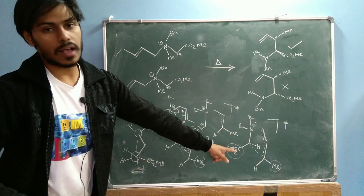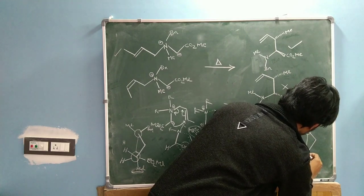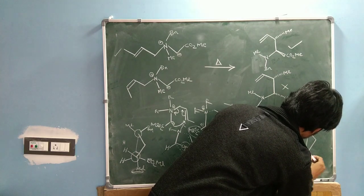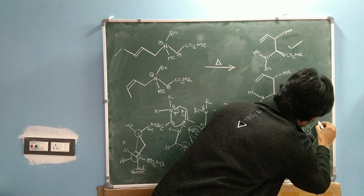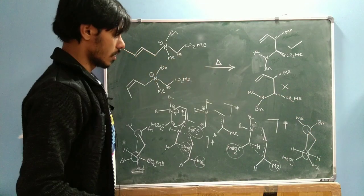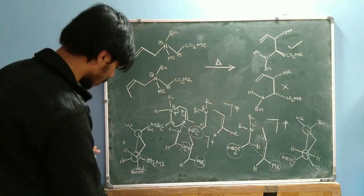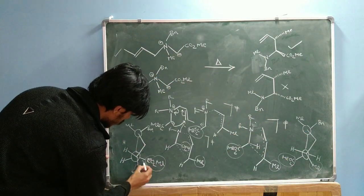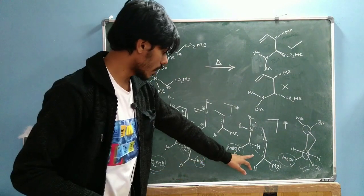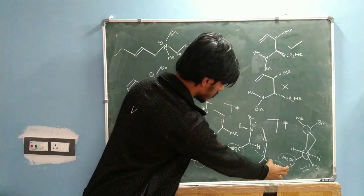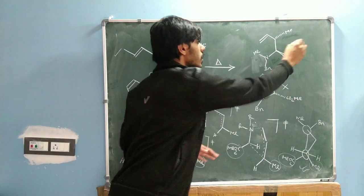The Newman projection of the other transition state looks like this: on the front carbon you have the methyl group and hydrogen, and on the back carbon you have the ester and hydrogen; on the other side you have the benzyl group and the methyl group. Comparing the two transition states, in one arrangement these groups are far apart, but in the other the methyl and ester groups sterically clash. Therefore, the arrangement where methyl and ester are anti is preferred.